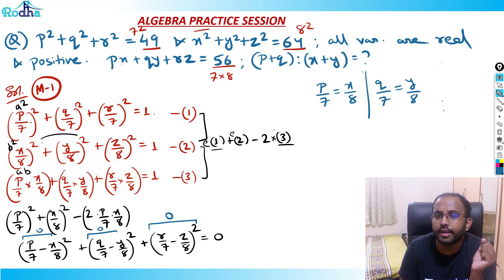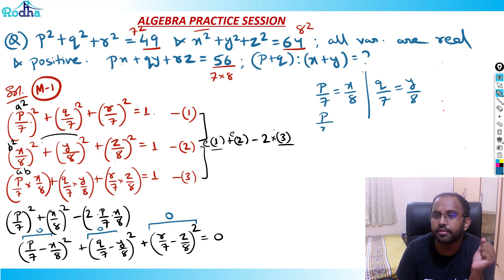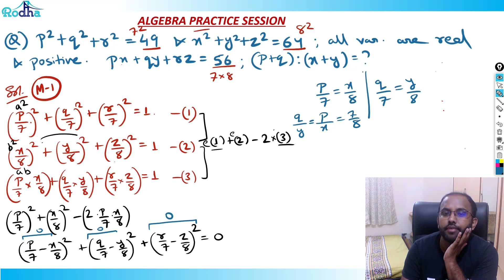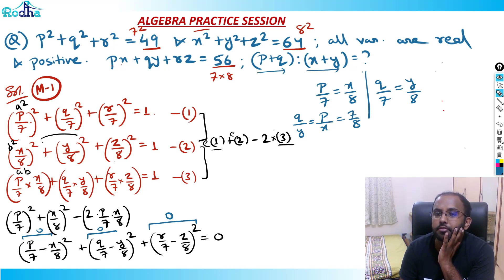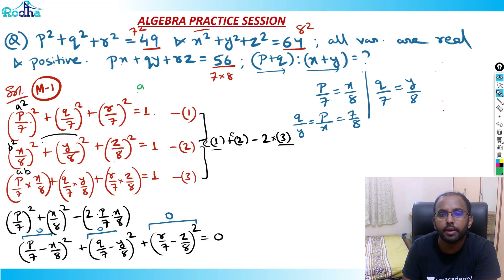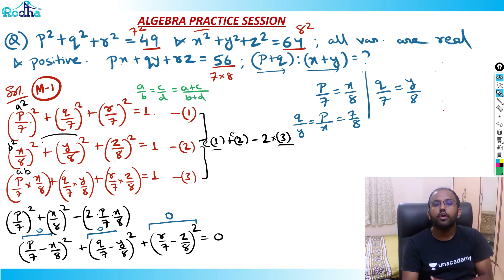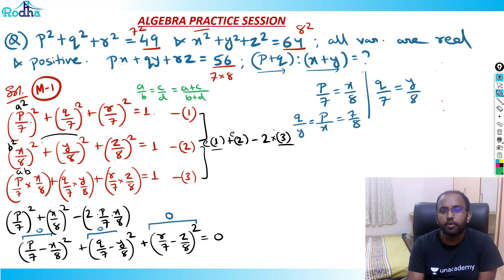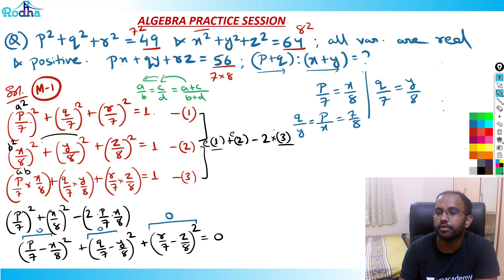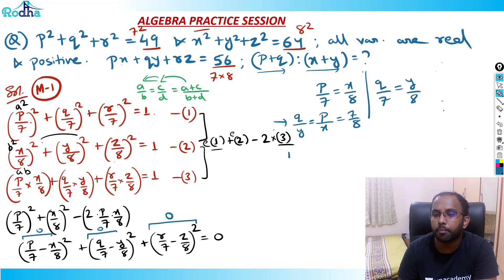Both ratios equal 7/8. So P/X = 7/8 and Q/Y = 7/8. I need to find (P+Q)/(X+Y). By the law of fractions, if A/B = C/D then (A+C)/(B+D) equals the same fraction. So (P+Q)/(X+Y) = 7/8.